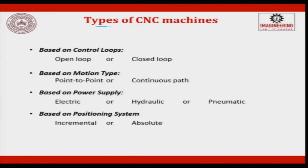CNC machines are classified into four types based upon the controller loop. There are two types: open loop and closed loop. In an open loop system, there is no feedback, so no immediate corrective action can be taken if there is a system disturbance. In a closed loop system, feedback from the machine tool is processed by the MCU. Today, wherever high accuracy and resolution are needed — such as in the nano domain — we use a closed loop system. Open loop systems offer accuracies of around 10 to 5 microns.